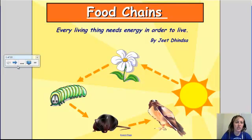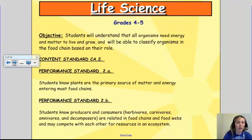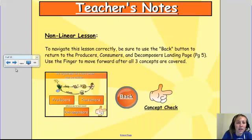I've chosen food chains to go over with you. There's a lot of great stuff in here, so I'm going to try to go through it quickly. These are the California standards, but it does go with Kentucky Social Studies Standard for fifth grade SC.05.4.7.1, and it's a non-linear lesson. We can press the back button and the concept check to check what we've learned, so we'll have to be moving forward throughout.